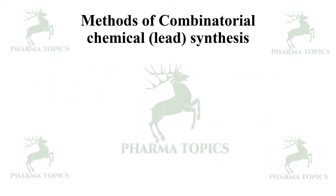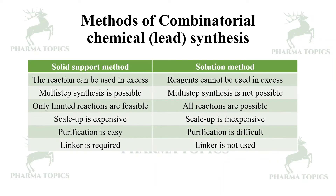The methods of combinatorial or lead synthesis: there are two methods — solid support method and solution method. In the solid support method, reagents can be used in excess, whereas in the solution method they cannot. Multi-step synthesis is possible in the solid support method, which is not possible in the solution method.